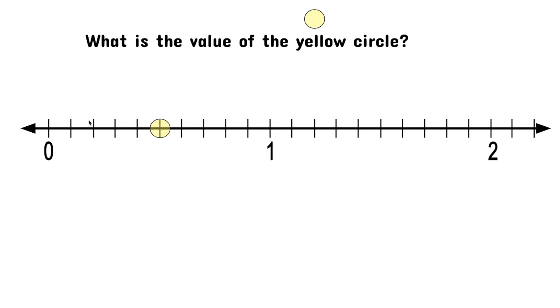And then two, three, four, five, six, seven, eight, nine, ten. We have ten equal parts, which means each of these little jumps is one tenth.